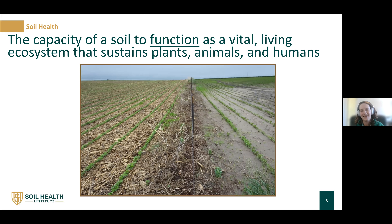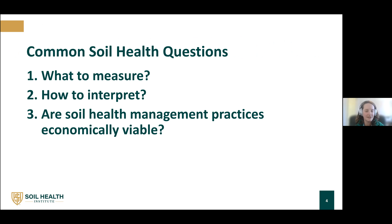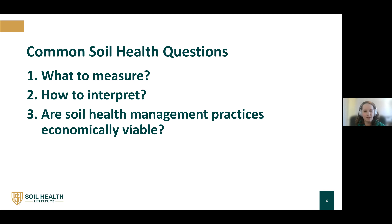No good soil health presentation is ever complete without the NRCS definition of soil health: the capacity of the soil to function as a vital living ecosystem that sustains plants, animals, and humans. I underlined the word 'function' because that's what we tend to think about — what is our soil able to do? That function is depicted in a picture of two fields managed differently with the same soils and climate, yet one shows ponding. This brings up the first big question: what do we measure? And secondly, how do we interpret those measurements?